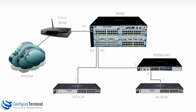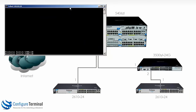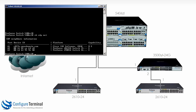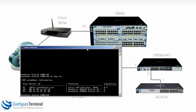The network diagram has been labeled with interface numbers from physically cabling the network, but how do you know which interfaces connect to which devices, or which 2610 has IP address 11 versus 12? This is where LLDP or CDP is very useful. Starting with the 5406 at IP address 14, the command 'show CDP neighbor' shows that port A1 is connecting to a Cisco 857 router, port A2 to a ProCurve 3500 switch, and port A3 to a ProCurve 2600 switch.